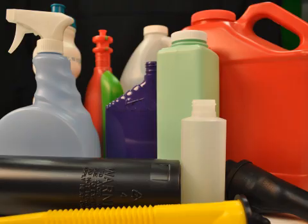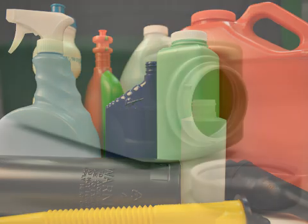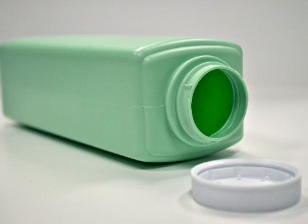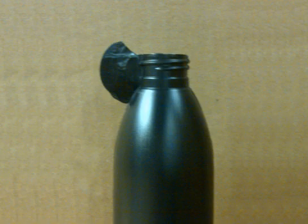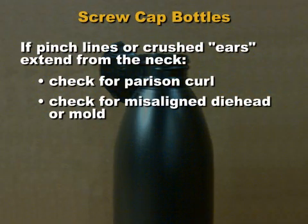The majority of blow molded items are bottles with threaded necks sealed with screw caps. It is very important that the neck is molded to precise dimensions and without flash. The molder must keep the parison inside the neck of the mold so that no pinch lines or crushed ears extend from the neck — this can happen if the parison is slightly too big or not centered when the mold closes. If crushed plastic is only on one side, check for parison curl. If the parison falls straight, the die head or mold may be misaligned.